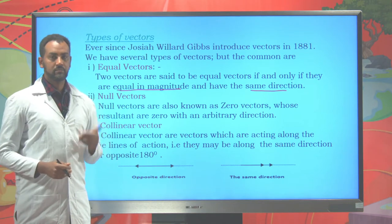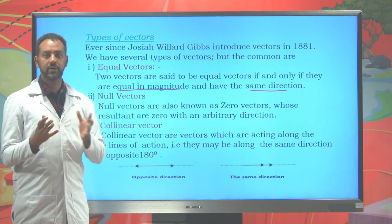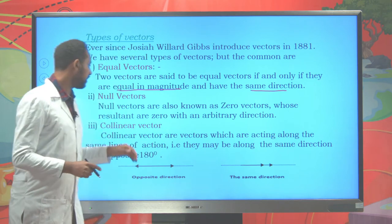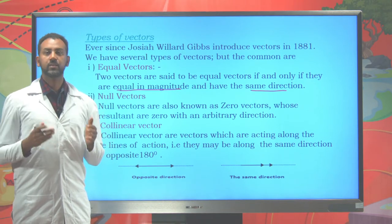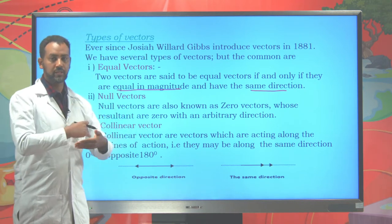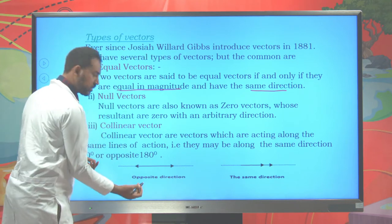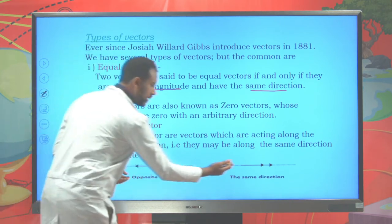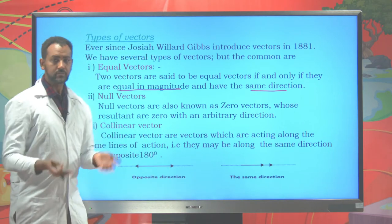We also have a null vector, also known as a zero vector. The difference of two vectors might give us zero, and that is called a zero vector or null vector — its direction is arbitrary. Collinear vectors are vectors found on the same line of action. They might act along the same direction or opposite direction; as long as they are on the same line of action, they are called collinear vectors.